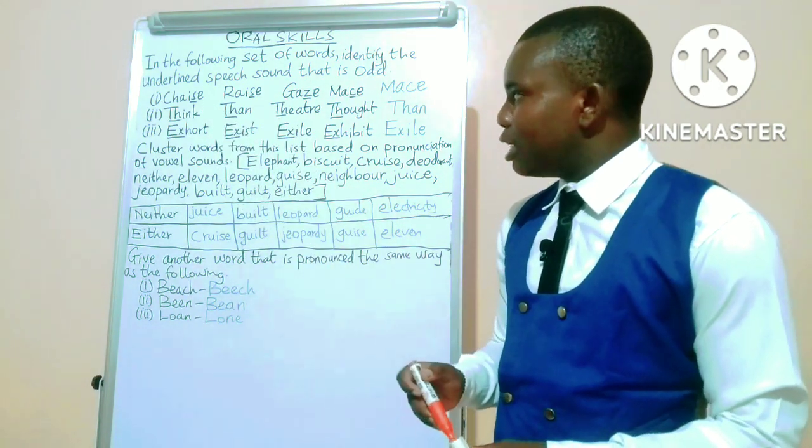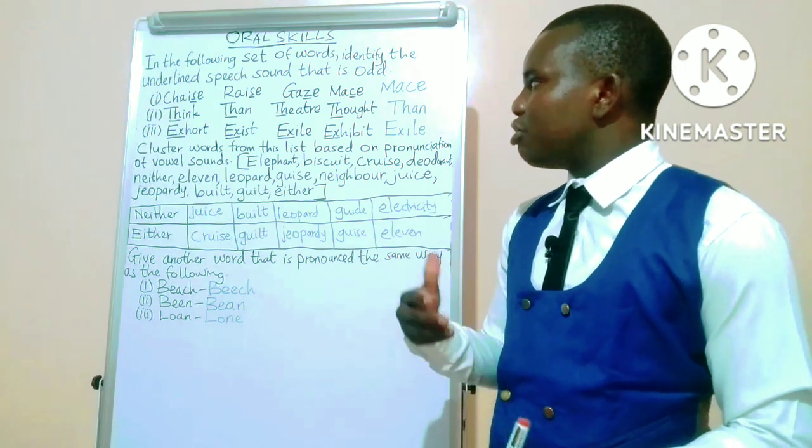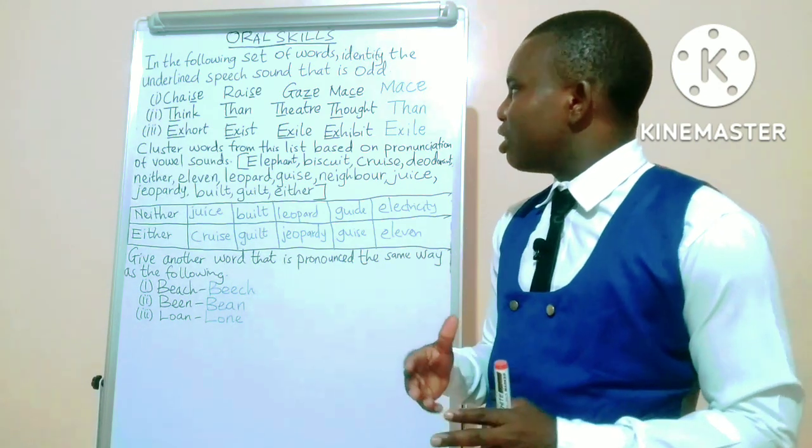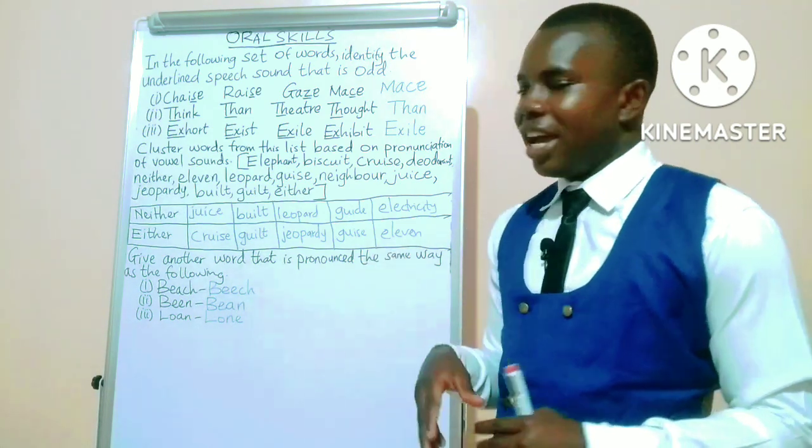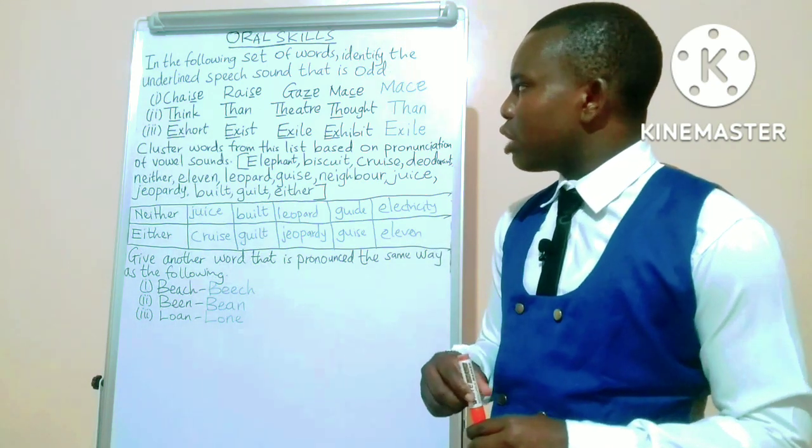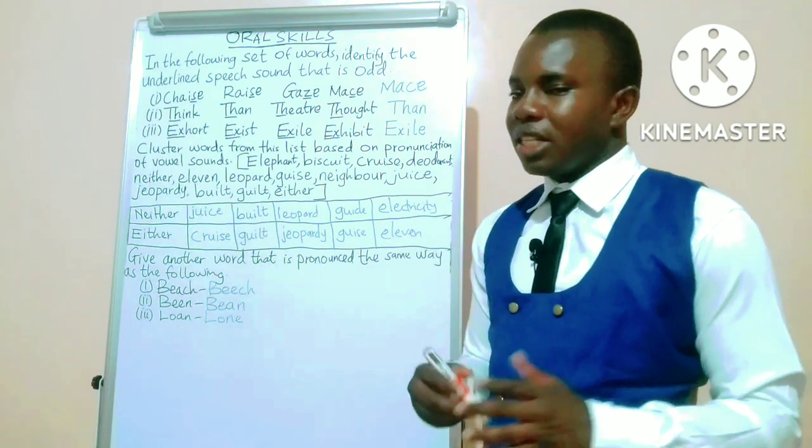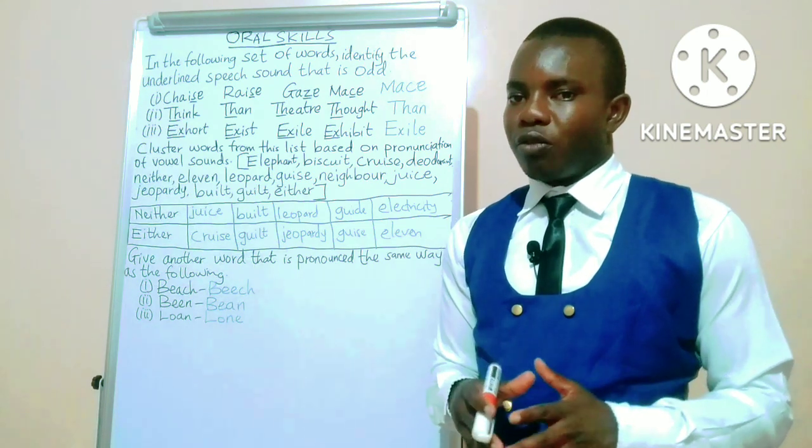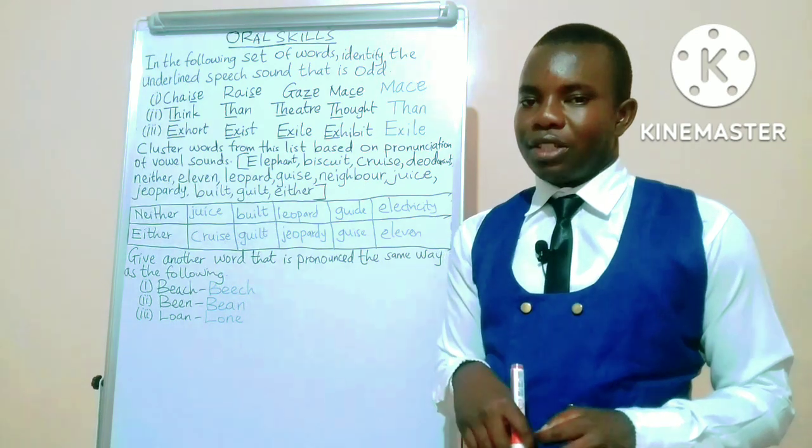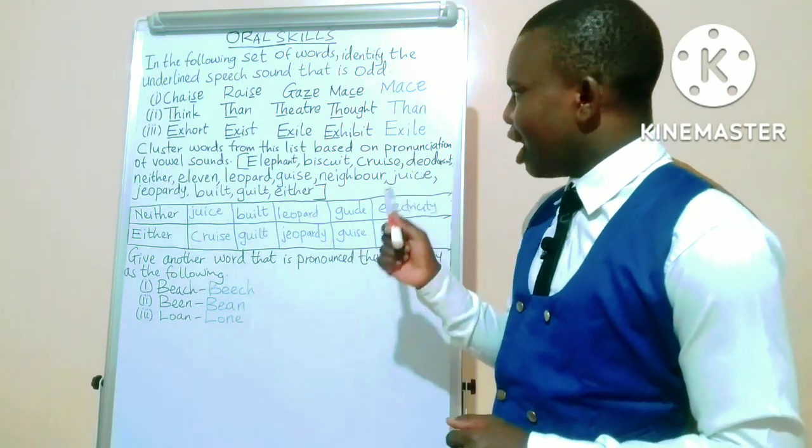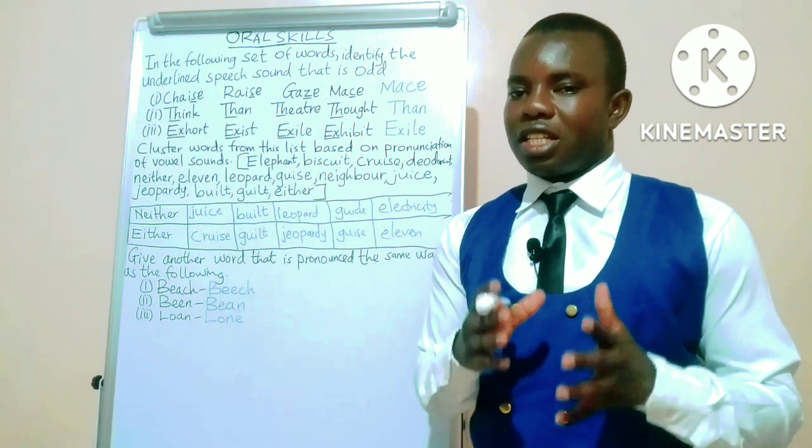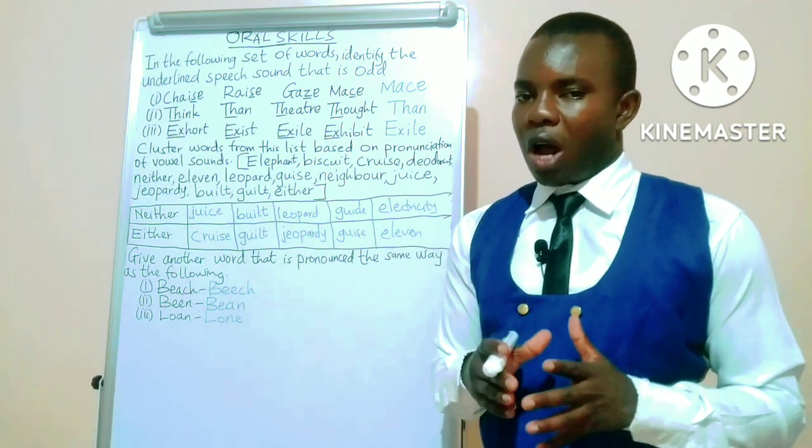In number one, we have those words there. The first word is read as chase, second word raise, then gaze, and lastly miss. If you look at the underlined letters, the sound that comes from them is /z/, while in the last word miss, the sound is /s/. So the odd one out is miss.